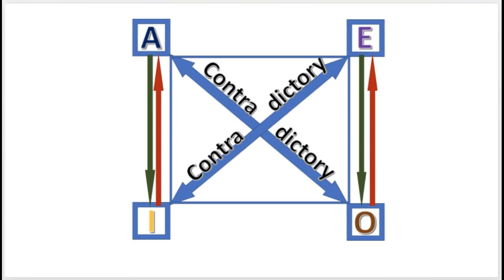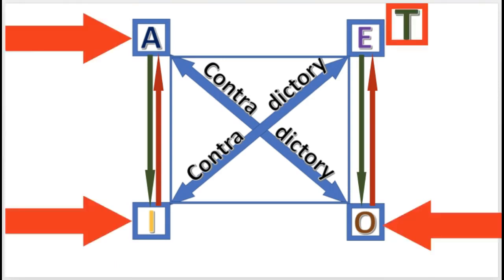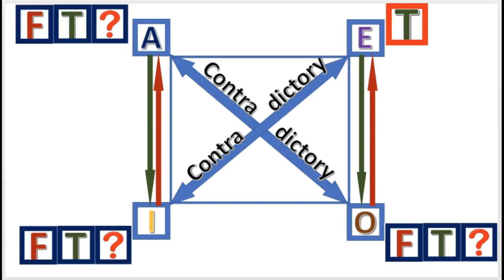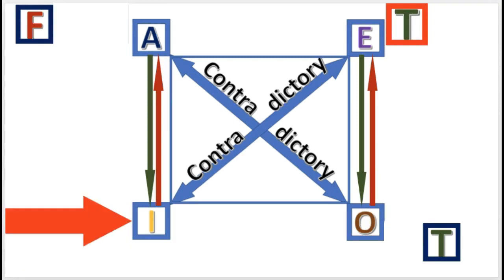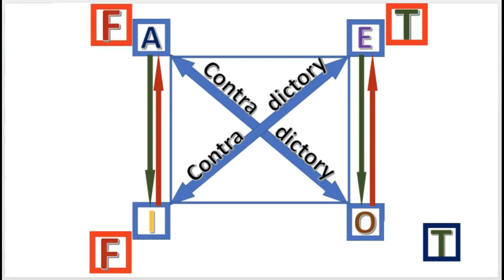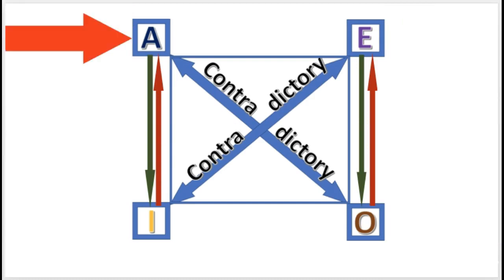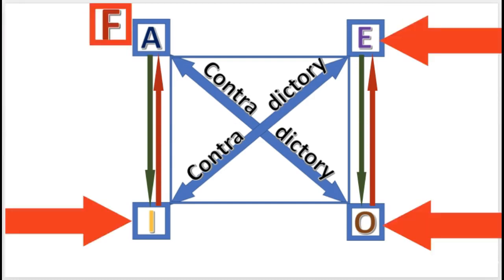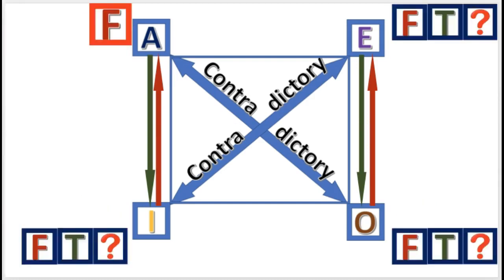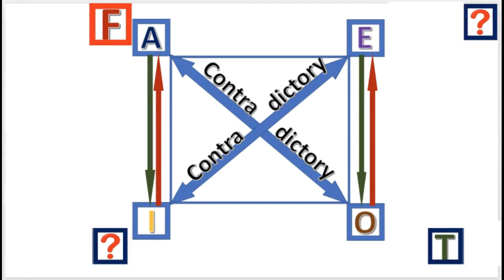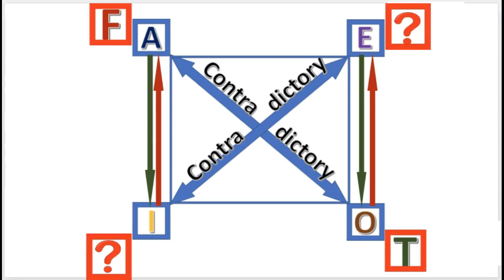Next practice problem: If E is true, what are the other truth values? The answer: I is false, A is false, and O is true. Next practice problem: If A is false, what are the other truth values? The answer: O is true, and E and I are undetermined.